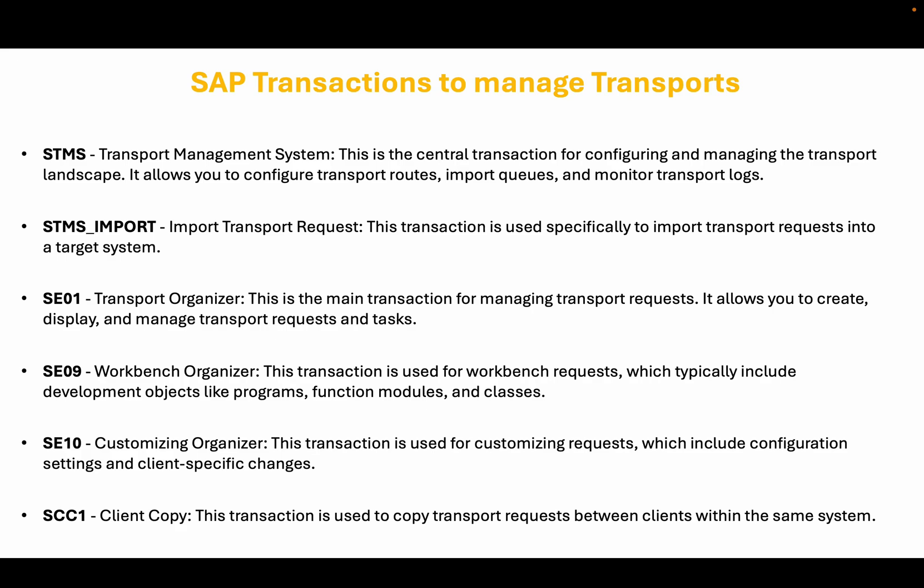SE01 is the main transaction for managing transport requests. It allows you to create, display, and manage transport requests and tasks. SE09 is used for workbench requests, which typically include development objects like programs, function modules, and classes. SE10 is used for customizing requests, which include configuration settings and client-specific changes. SE01 is also used to copy transport requests between clients within the same system.